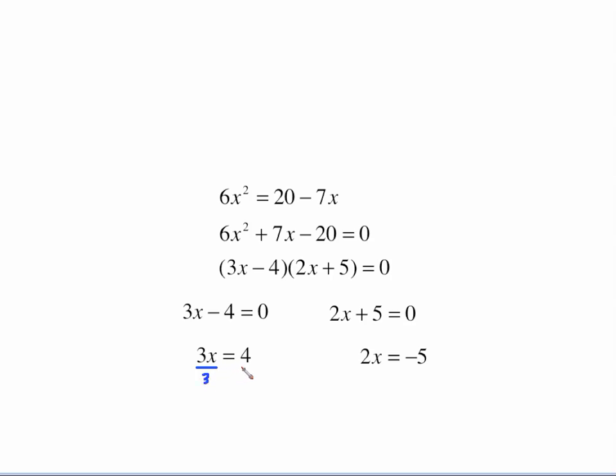Divide both of these by 3. On this one, divide both of these by 2, and you'll have those answers: x equals 4 thirds, x equals negative 5 halves.